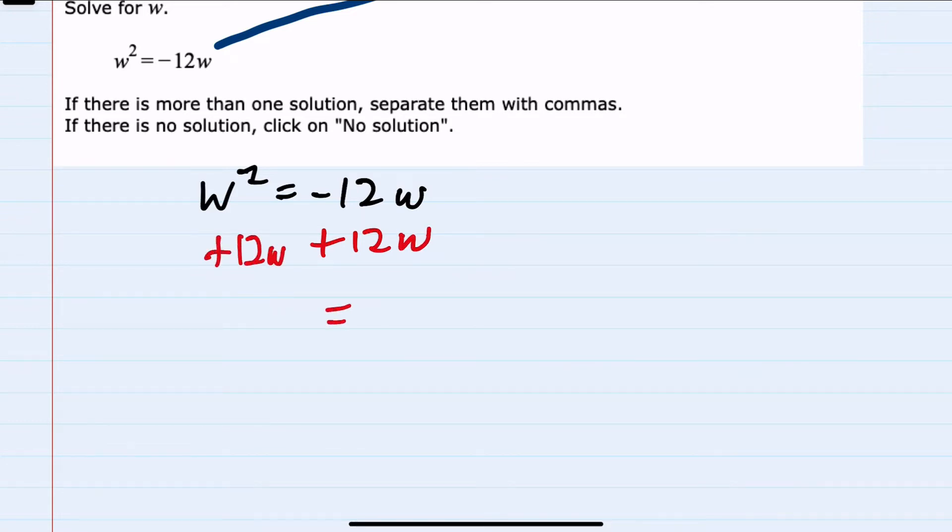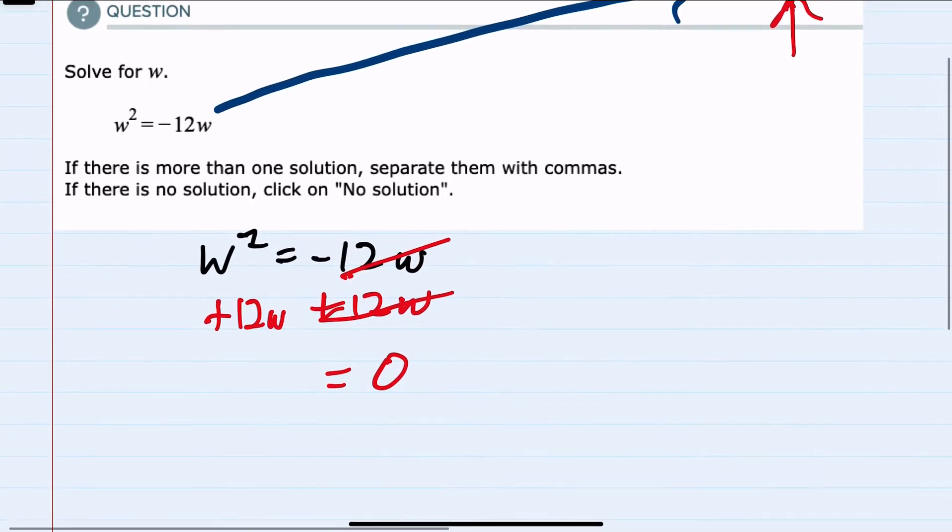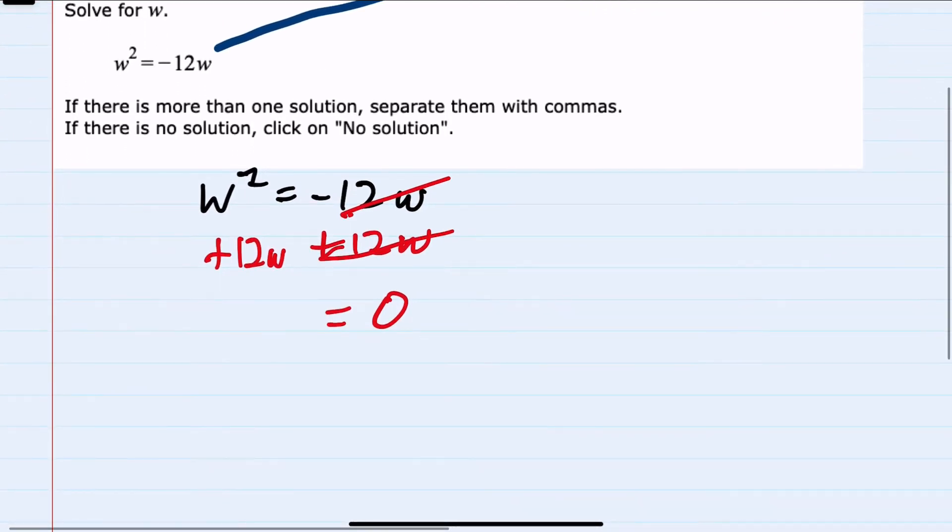On the right-hand side, it will cancel, giving me the zero. And that's the form that we were shooting for. And then on the left-hand side, I now have w squared plus the 12w.